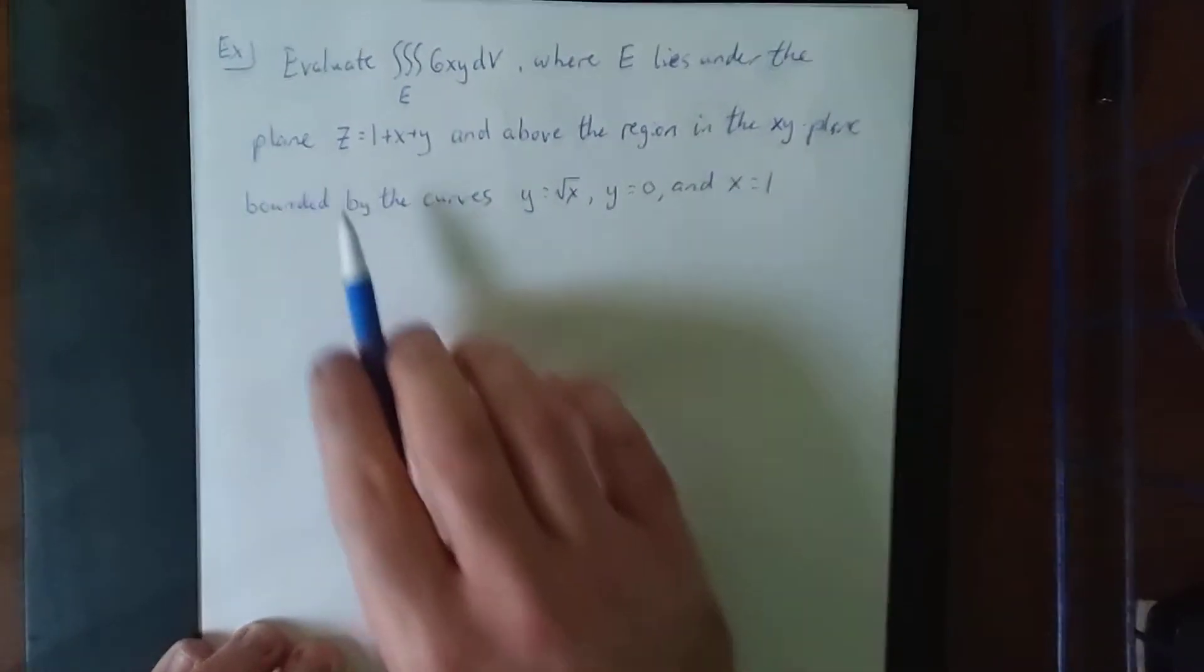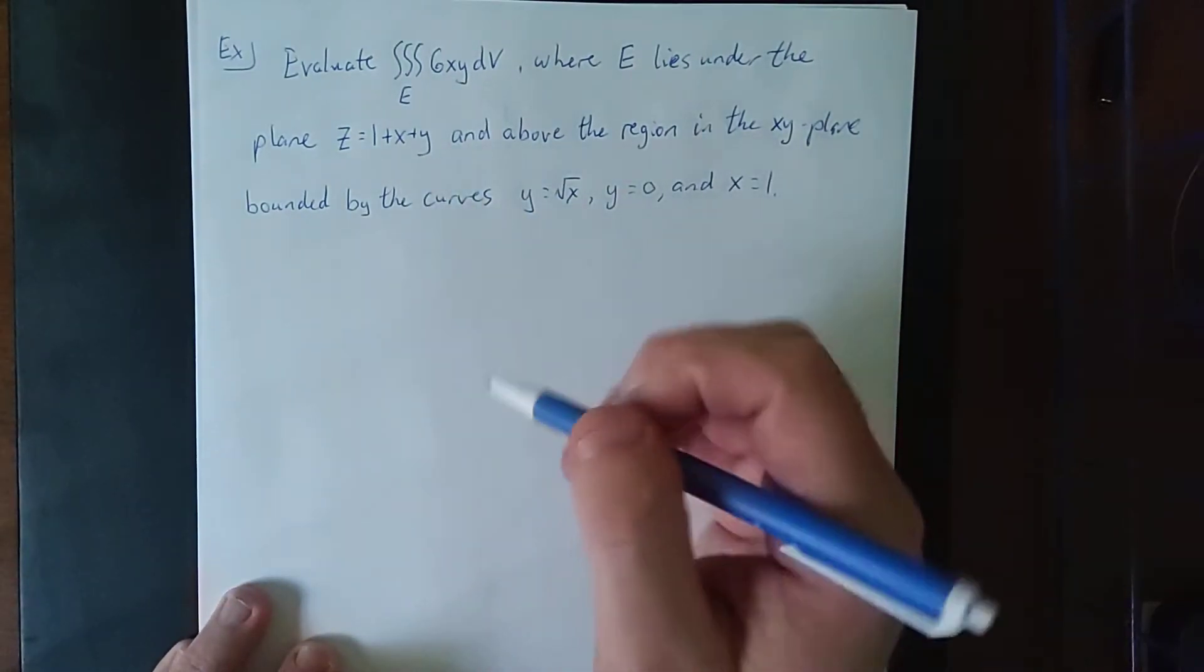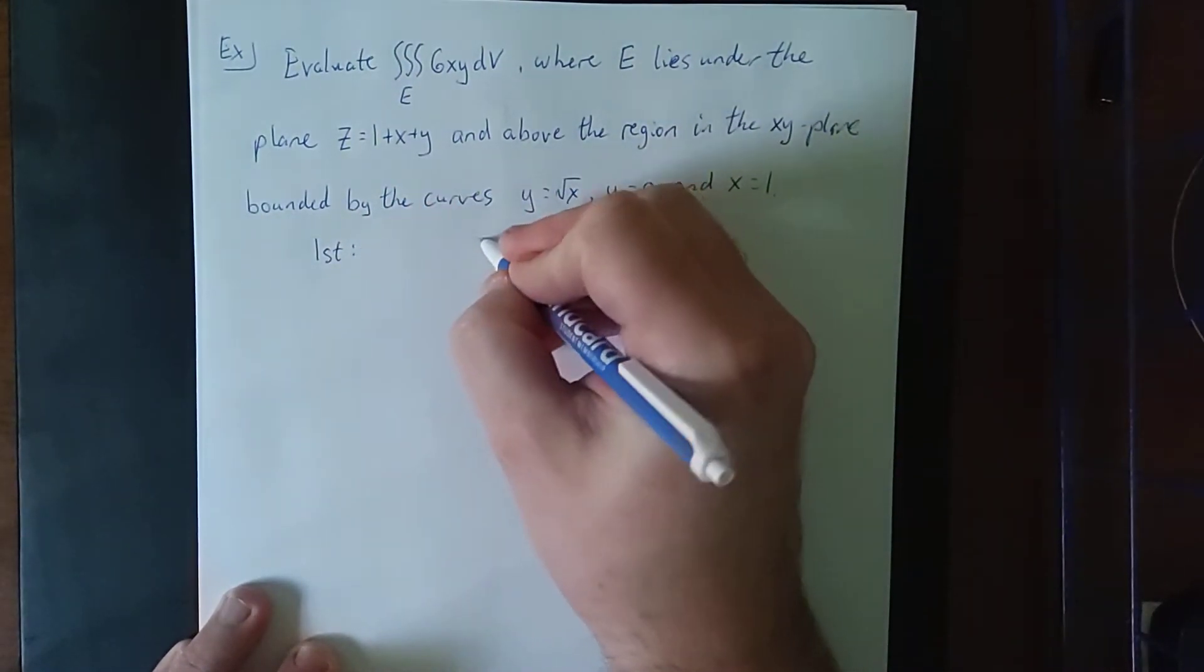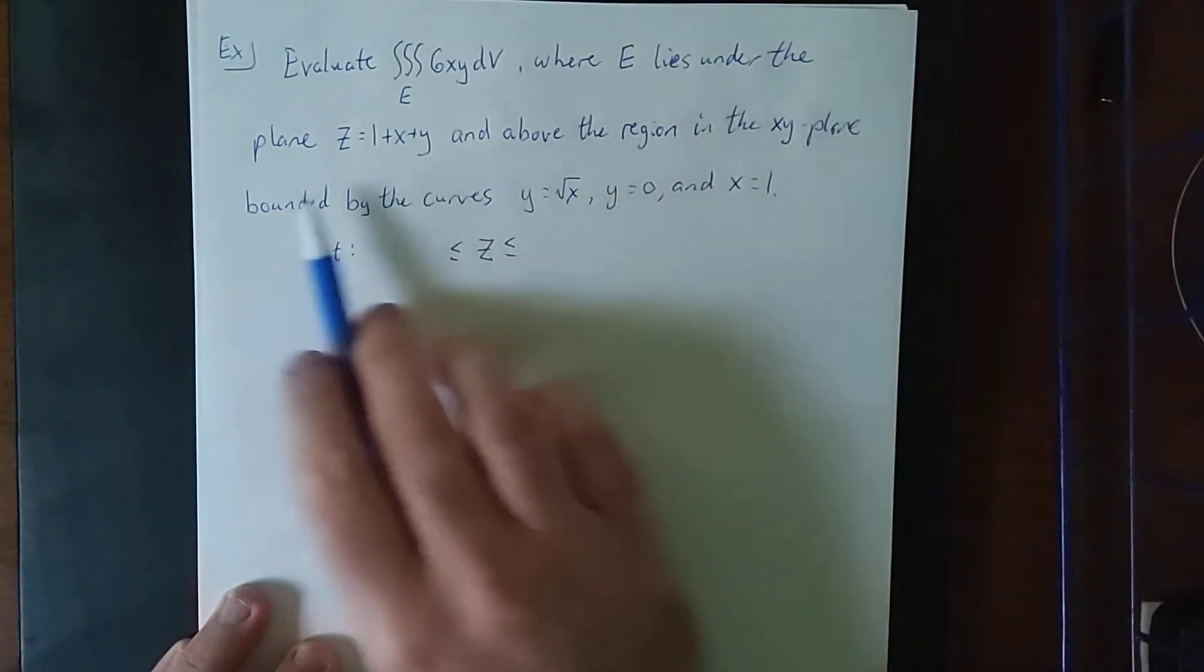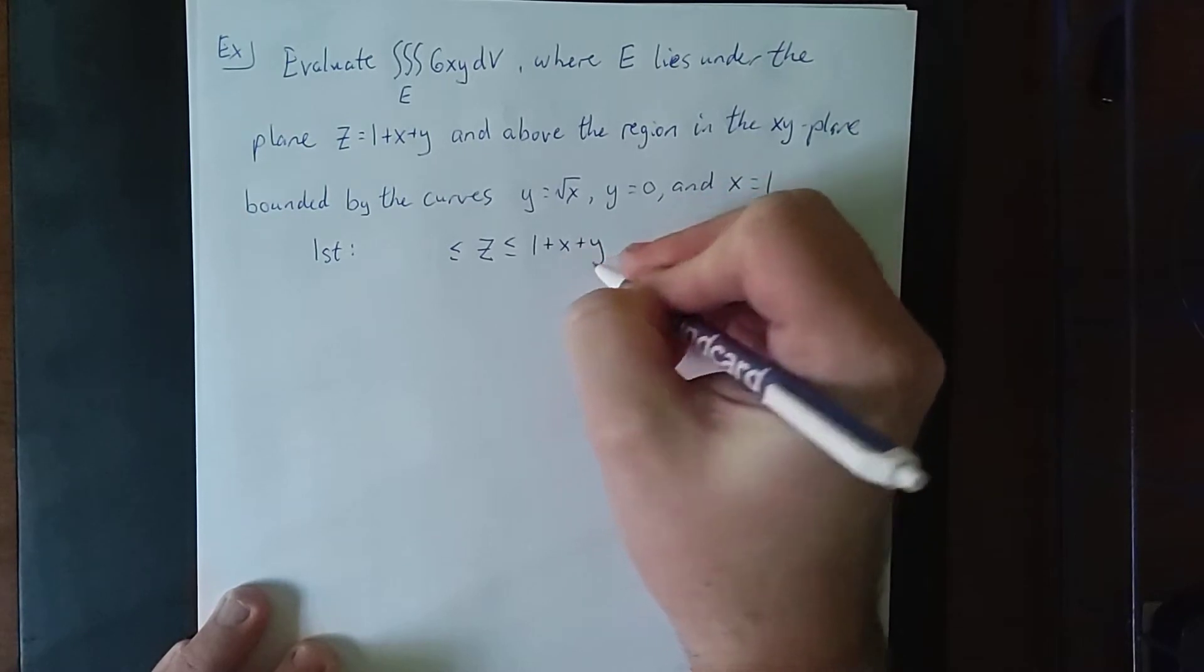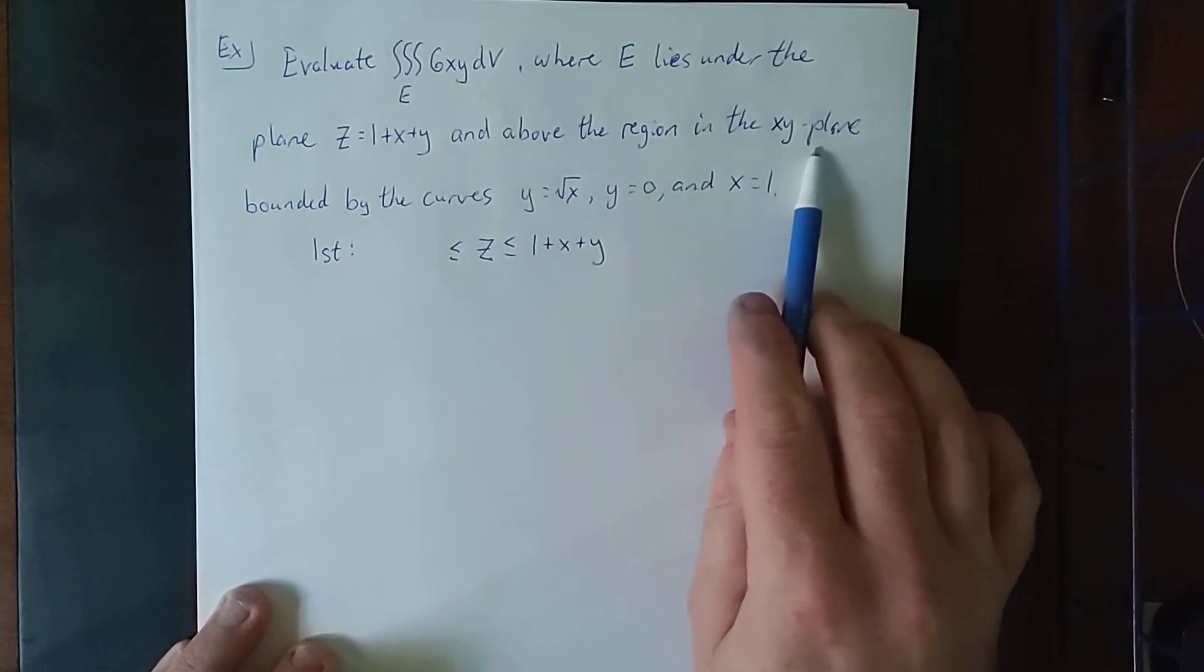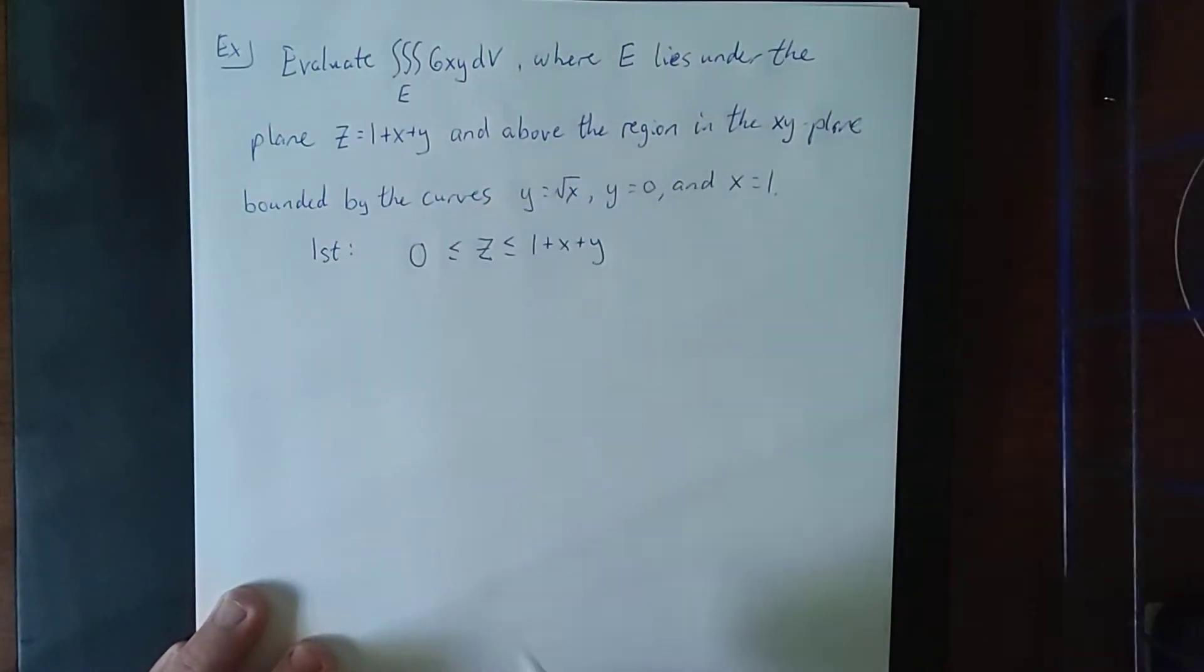So right away, I'm seeing that z is being given to us as a function of both x and y. That means that for my first integral, I would really like to set it up with respect to z. Now it does say under the plane z equals 1 plus x plus y, which means that 1 plus x plus y is going to be my upper bound, so that z is guaranteed to be below that. It also says above the region in the xy plane. Now right there, that's going to give me what my lower bound is for z. If it's above the xy plane, that would be above z is equal to 0.